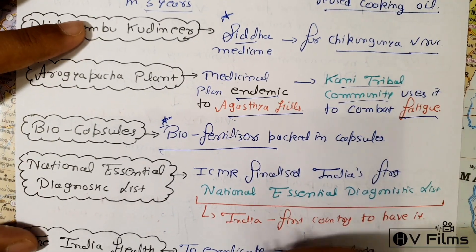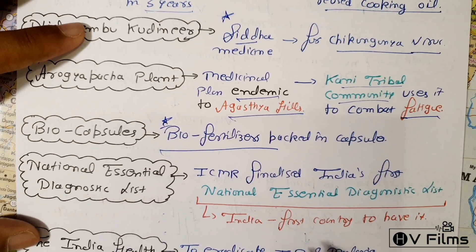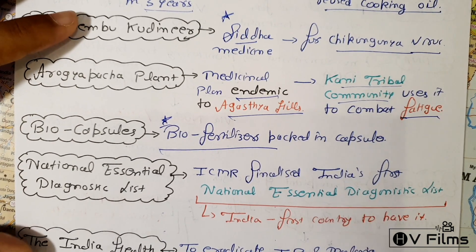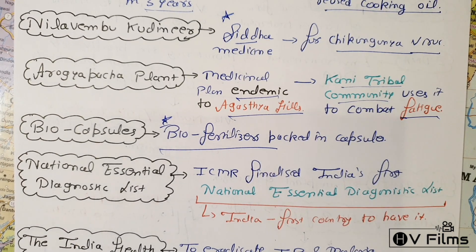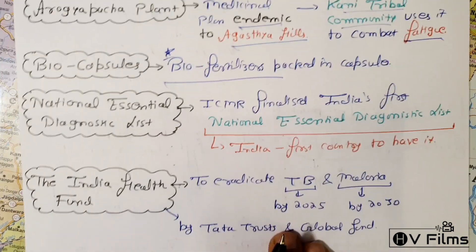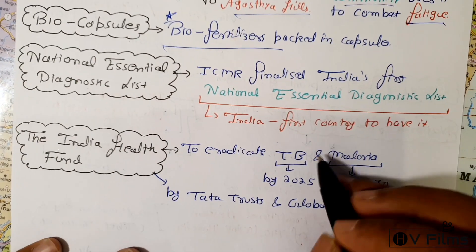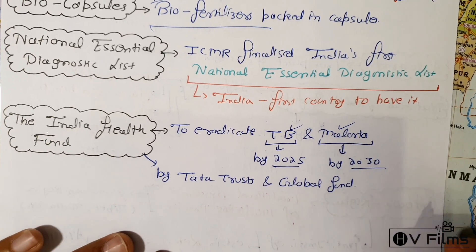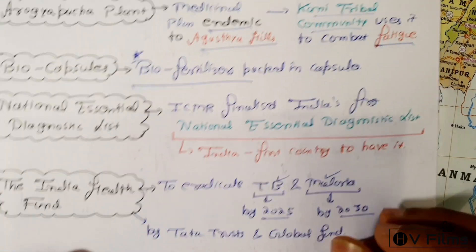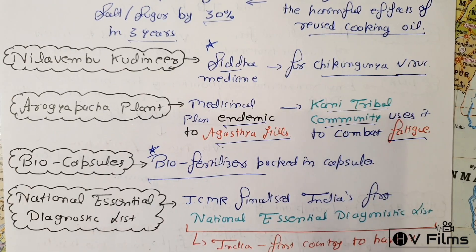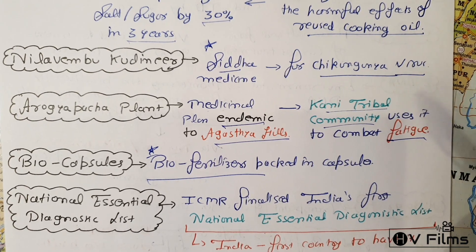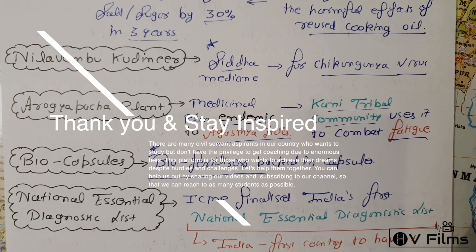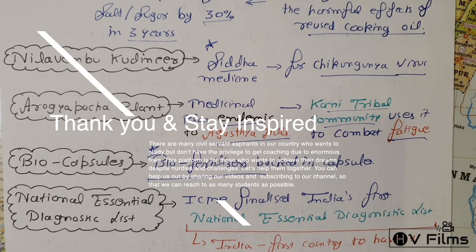India's National Essential Diagnostic List is the first of its kind in the country. The India Health Fund, backed by Tata Trust and Google, aims to eradicate tuberculosis by 2025 and malaria by 2030. This concludes the current affairs section on science and technology; the next section will cover computers and infrastructure.